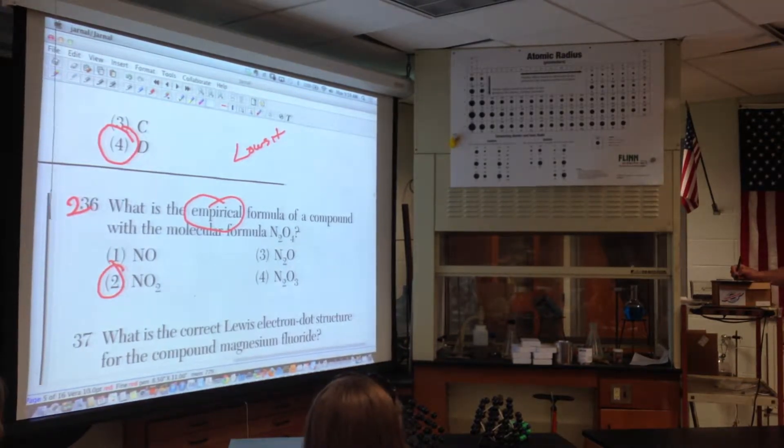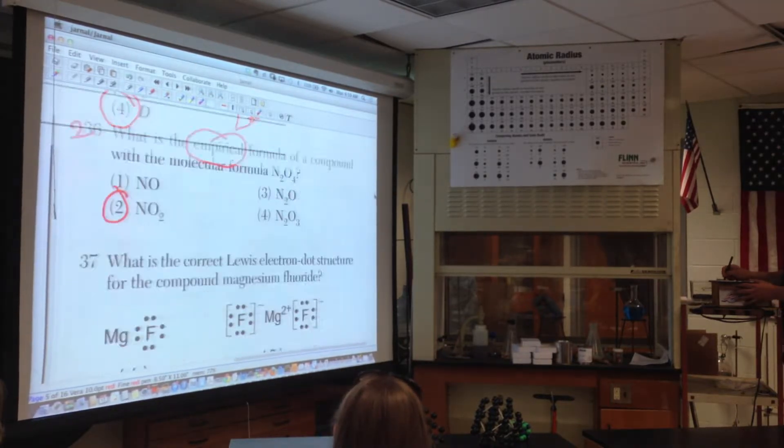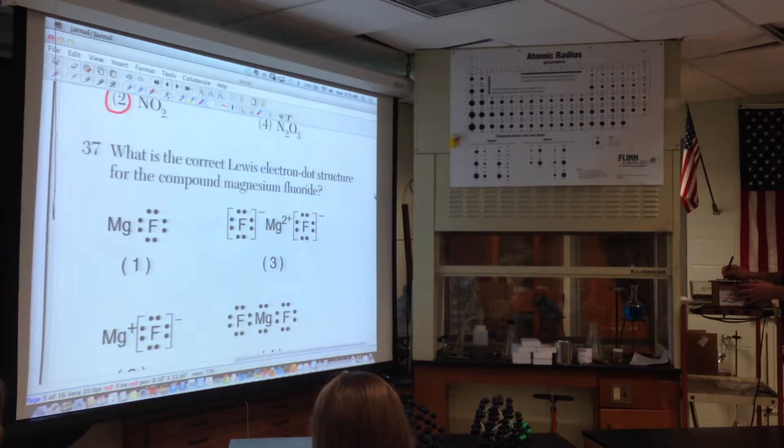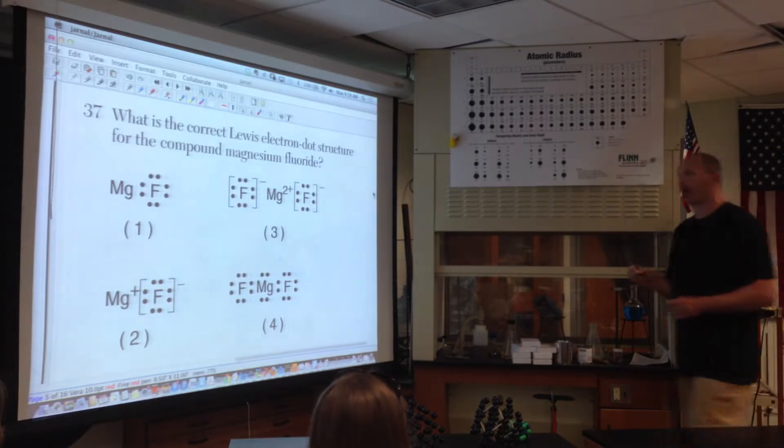I think it might be NO2. Okay. Now, the math is easy. You had to know empirical is the lowest ratio. So 2 to 4 becomes 1 to 2. Choice two. There's nothing more to cover. Questions like that, I go, really? Really? 37.